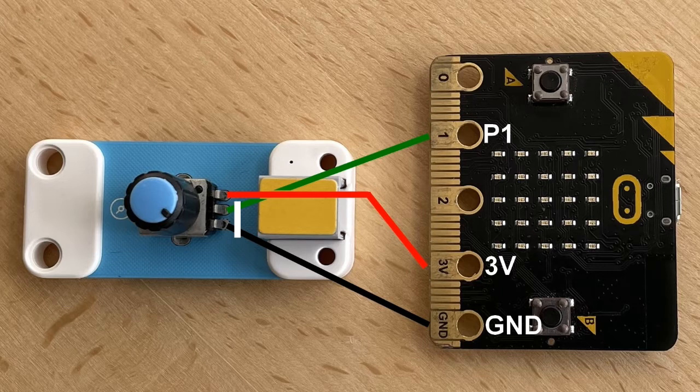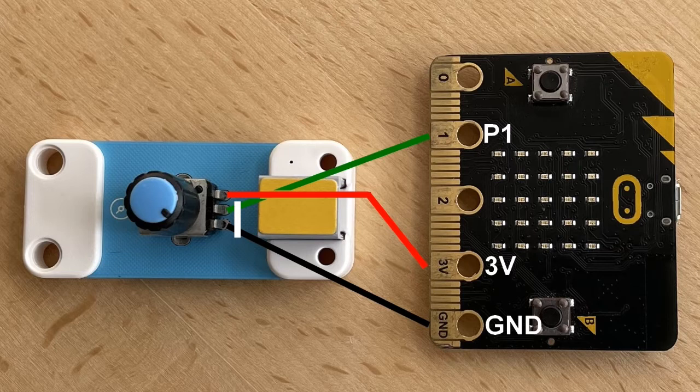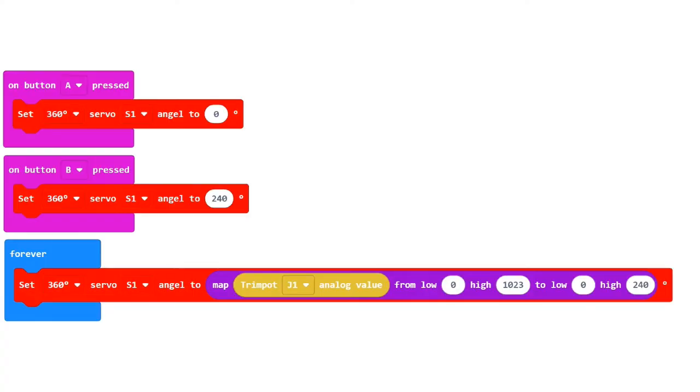The new block is set to be a 360 degree servo connected to S1 and it must rotate a number of degrees which is determined from the potentiometer connected to J1.